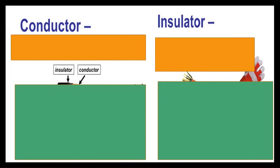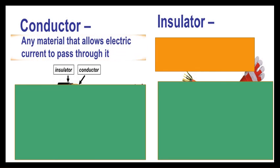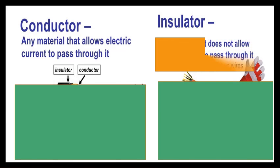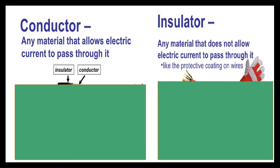Have you encountered these words? Conductor and insulator. Do you have any idea? A conductor is any material that allows electric current to pass through it. On the other hand, an insulator does not allow electric current to pass through it, like the protective coating on wires.